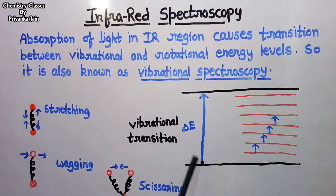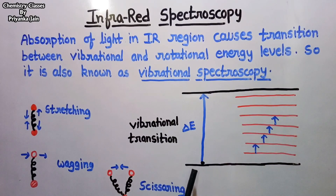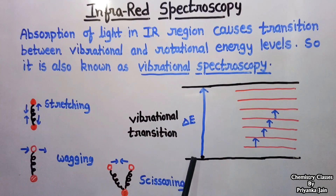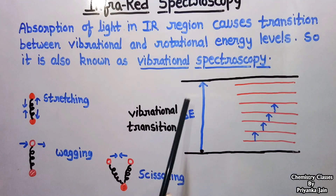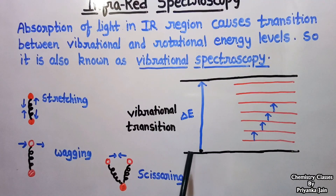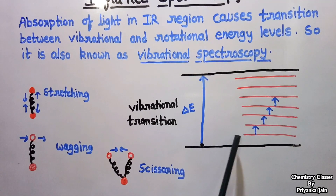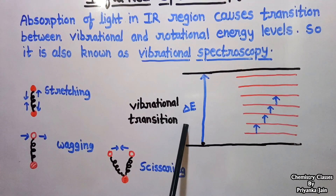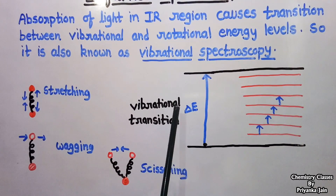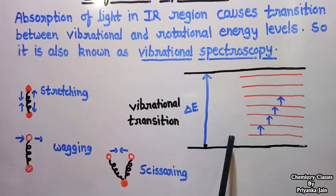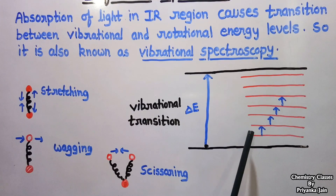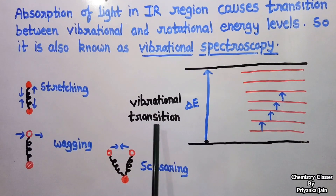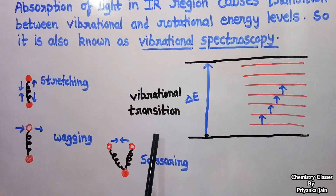There are two vibrational energy levels. When a compound is exposed to IR radiation, a transition between these two energy levels can occur — the electron jumps from one level to the other and a vibrational transition happens. Each vibrational energy level is associated with several smaller rotational energy levels. The energy required for a vibrational transition is higher, and this energy is sufficient to also cause rotational transitions simultaneously. Hence, we get both rotational and vibrational spectra, making it also known as vibrational-rotational spectroscopy.